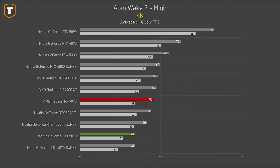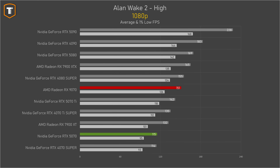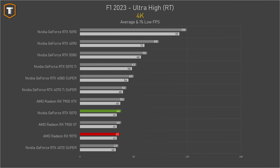Starting with Alan Wake 2 on high settings without ray tracing, the RX 9070 is off to a great start, beating the RTX 5070 by just over 30 percent at 4K resolution, while the 5070 showed no improvements over the RTX 4070 Super from last generation. You should probably enable upscaling on both cards for a proper 4K experience in this game. At 1440p the gap remains the same, and even at 1080p the 9070 was more than 30 percent faster.